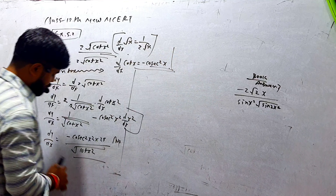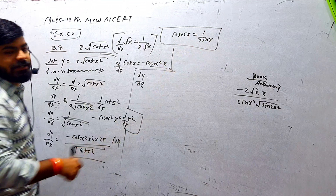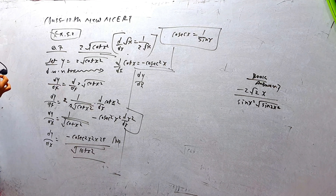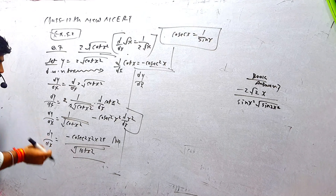Book के answer के लिए convert करना पड़ेगा। Basic formula: cosec(x) = 1/sin(x)। तो cosec²(x²) = 1/sin²(x²)। और cot(x²) = cos(x²)/sin(x²)। dy/dx में cosec² को 1/sin² से replace करें, और denominator में √(cot x²) को √(cos x²/sin x²) लिखें।